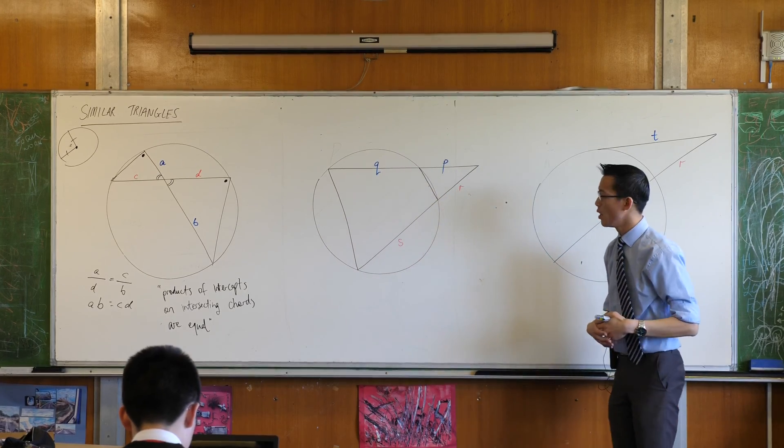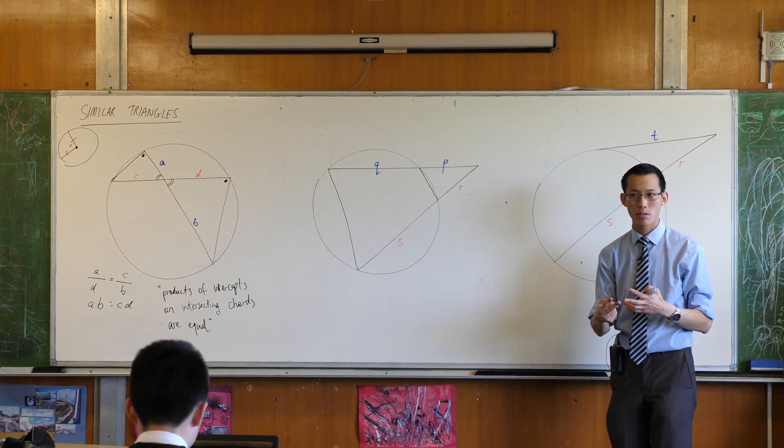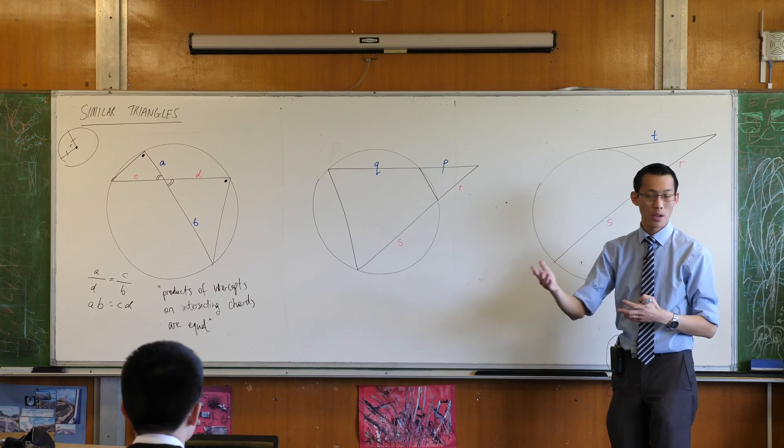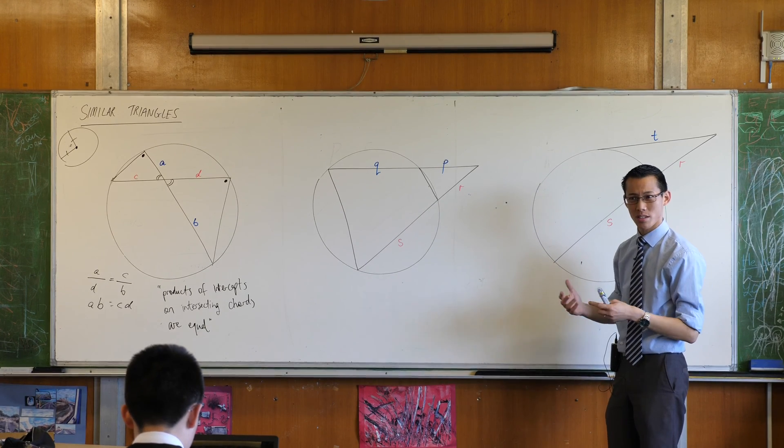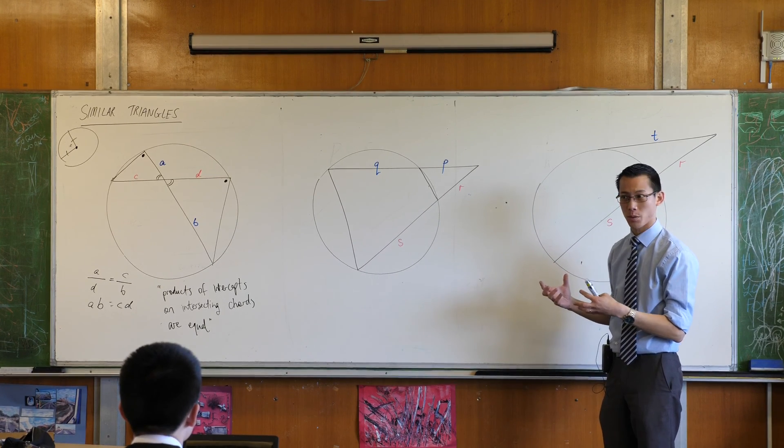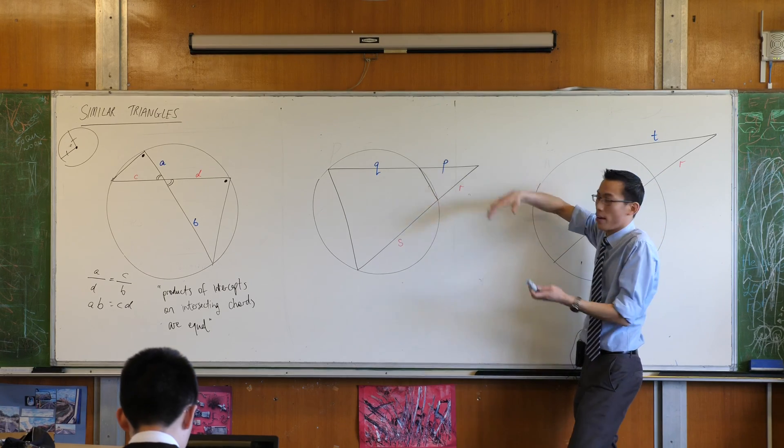Now how do we go about showing that? Well again we only need a pair of angles, sorry a pair of pairs of angles. There's a really easy one. What's the easiest angle that's related between both of them? Yeah just this guy, he's in both triangles.